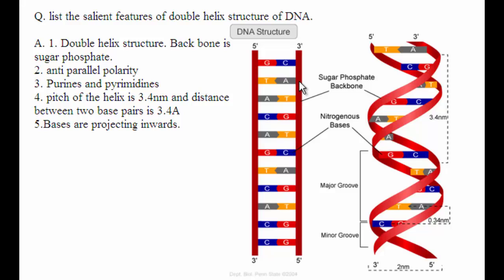The two strands of DNA are joined together by hydrogen bonds between purines and pyrimidines. There are four bases: A, T, G, and C. A and G are purines, while cytosine and thymine are pyrimidines. Adenine always pairs with thymine by two hydrogen bonds, and guanine always pairs with cytosine by three hydrogen bonds.